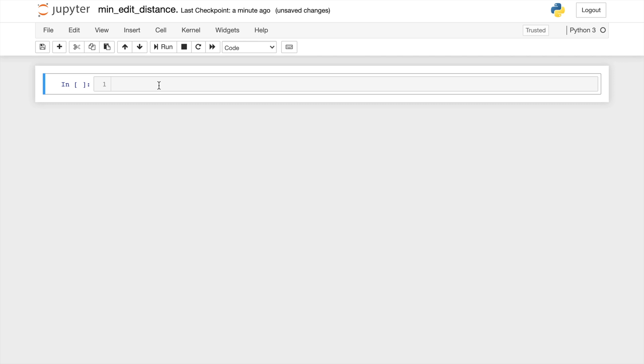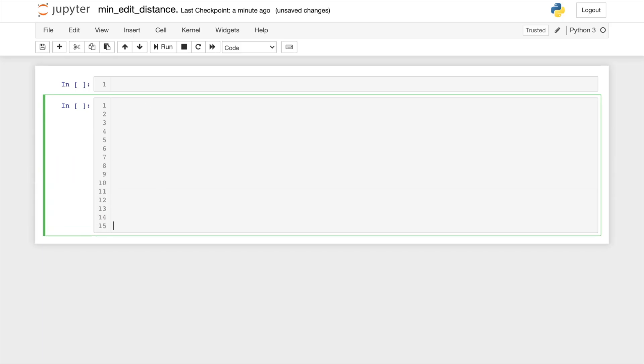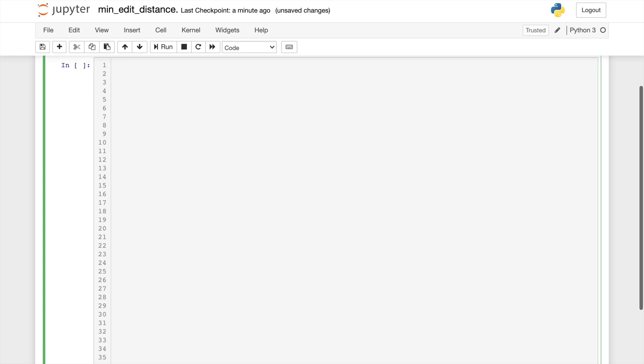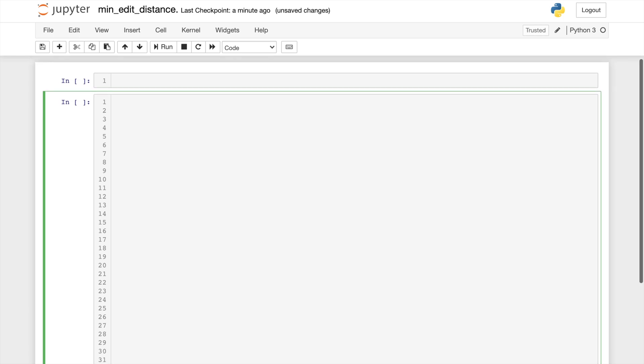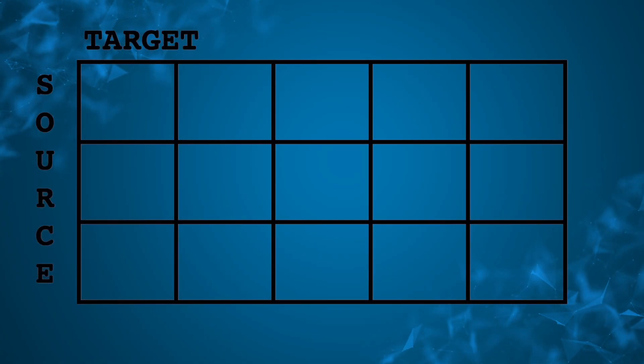We are going to be working in a Jupyter Notebook, so let's give ourselves some space to work with here. We will write a function that calculates the distance between any two given words. One word we will call the target, and the other word we will call the source. The way this algorithm will work is by formatting a matrix or array. Each letter in the target will be a column, and each letter in the source will be a row.